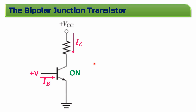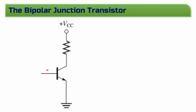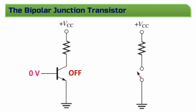If the base is low and does not exceed the emitter voltage by 0.7V, then the transistor is OFF. When OFF, it represents an open switch between the collector and the emitter — an open switch between VCC and ground. Summary: if the base is high, transistor is ON; if the base is low, transistor is OFF.